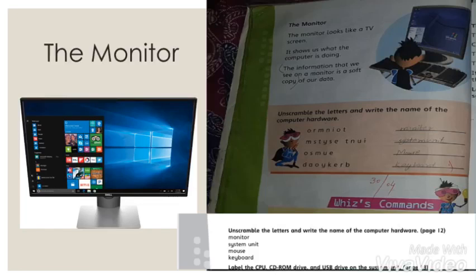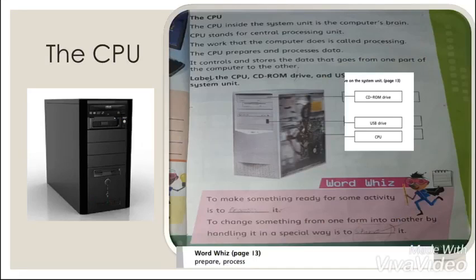The next is CPU. CPU stands for central processing unit. It is also called the brain of computer. The black box you are seeing on the screen is called system unit, and CPU is present inside the system unit. So CPU prepares and processes the data. It also stores all types of data that is present inside the computer.